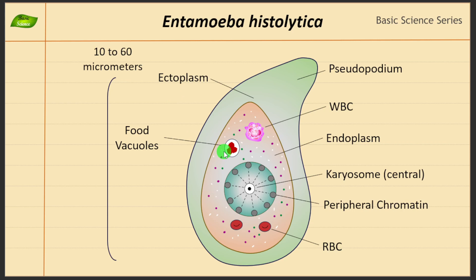Before we jump onto the illustration of this organism, let me tell you something about Entamoeba histolytica, which is highly important to understand because every component has a specific function, and overall that is related to the life cycle of this organism. Entamoeba histolytica is a single-celled eukaryotic organism belonging to phylum Amoebozoa, so it will have features of a eukaryotic cell.